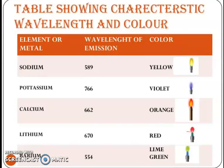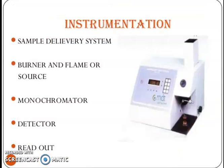The following table shows characteristic wavelengths and colors: Sodium — 589 nm, yellow. Potassium — 766 nm, violet. Calcium — 622 nm, orange. Lithium — 670 nm, red. Barium — 554 nm, lime green.